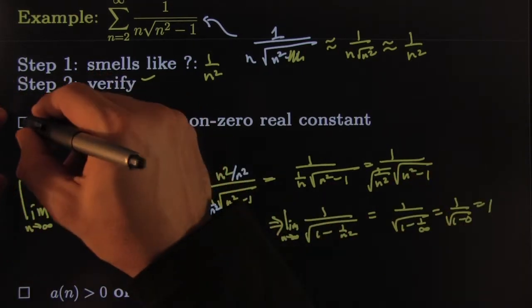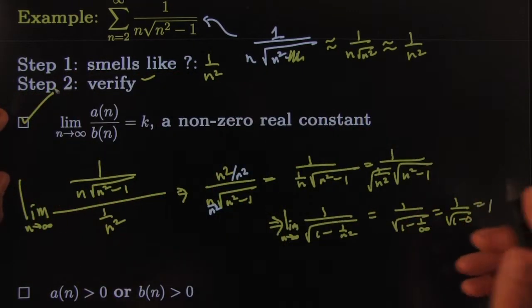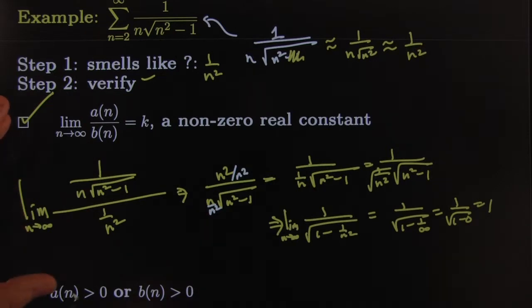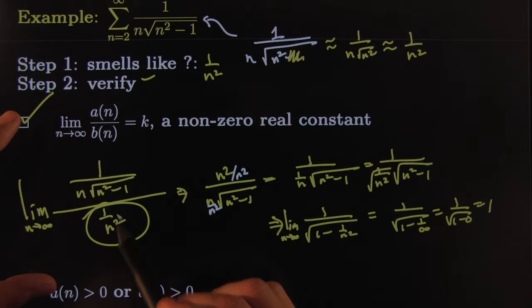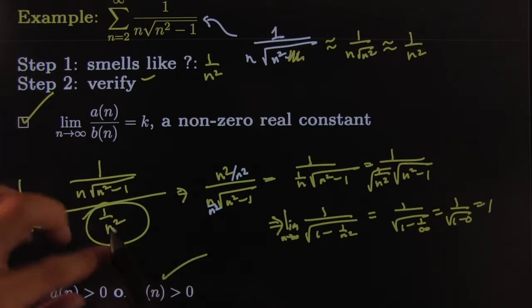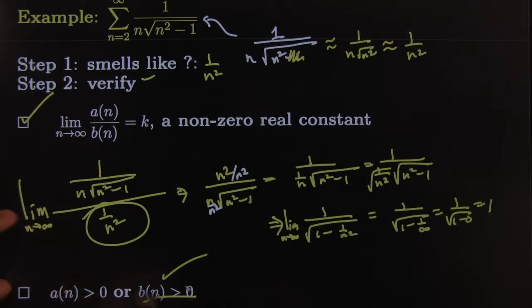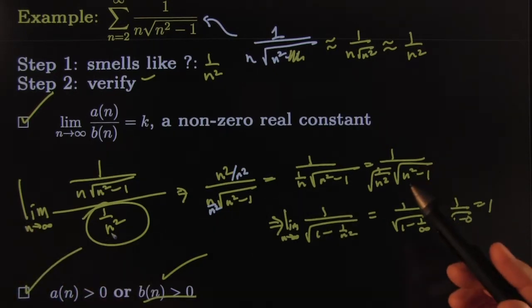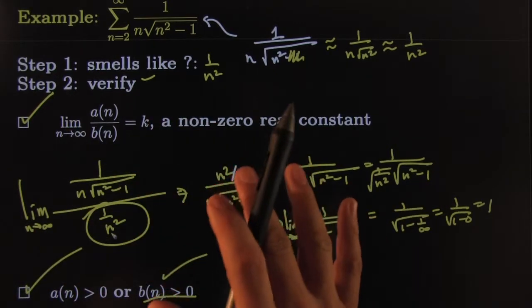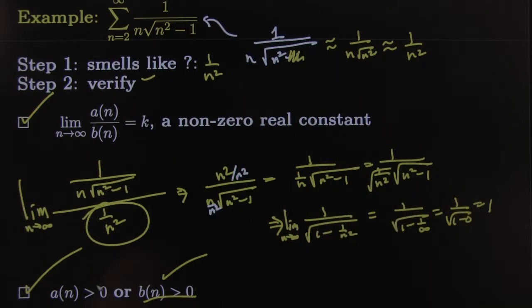What have we done? This shows that they behave the same, so you could put a check mark there. But that's not all we have to do. We also have to check, remember, that one of them is positive. Clearly the one I was comparing it to was positive, because all my n's are positive. The square root of positive, one divided by positive is positive. Enough said, positive.